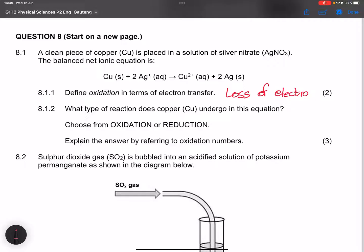And they say to us, what type of reaction does copper undergo in this reaction? Choose from oxidation or reduction. So if you look at copper, it starts with an oxidation number of zero over there, and it becomes two plus. It tells you that it has lost electrons. So it does mean that that is oxidation.